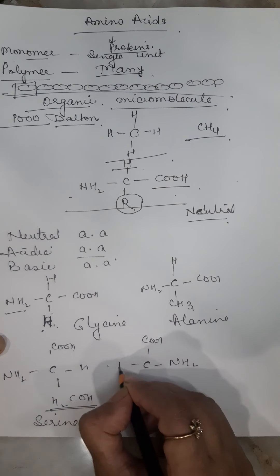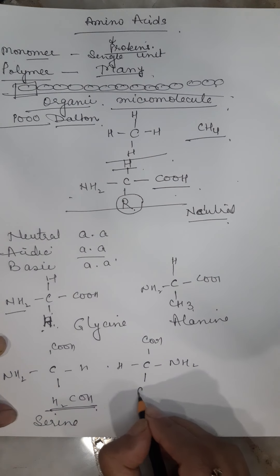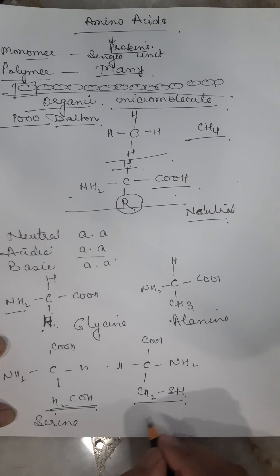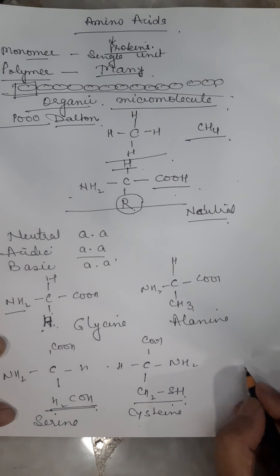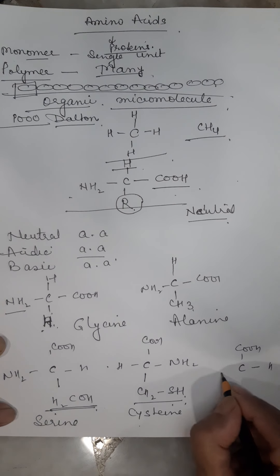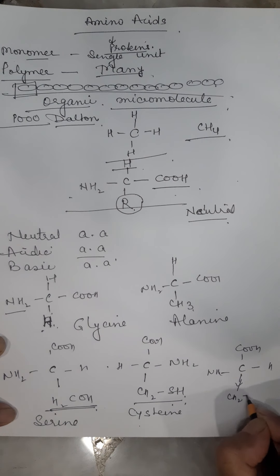But if R is replaced by a sulfur-containing derivative, this becomes a basic amino acid. And if there is an additional carboxyl group, this becomes an acidic amino acid - aspartic acid.